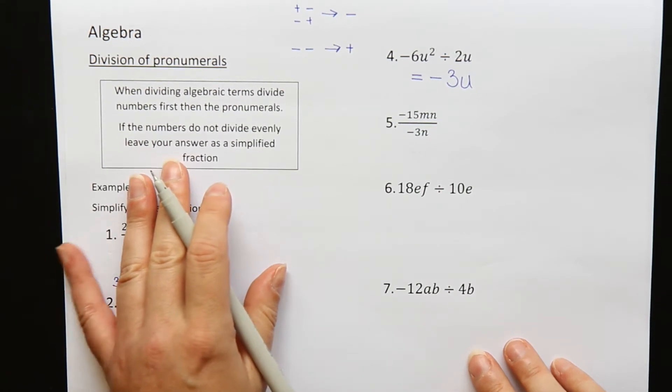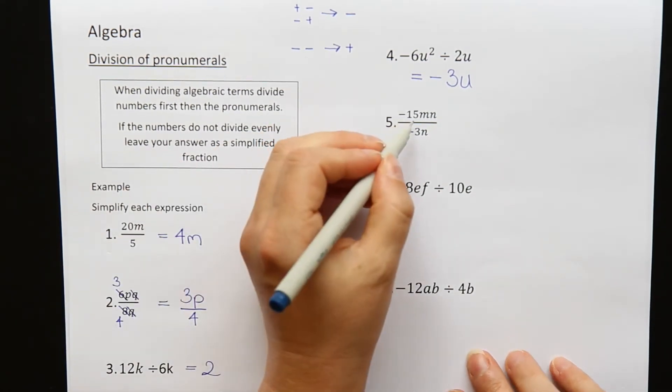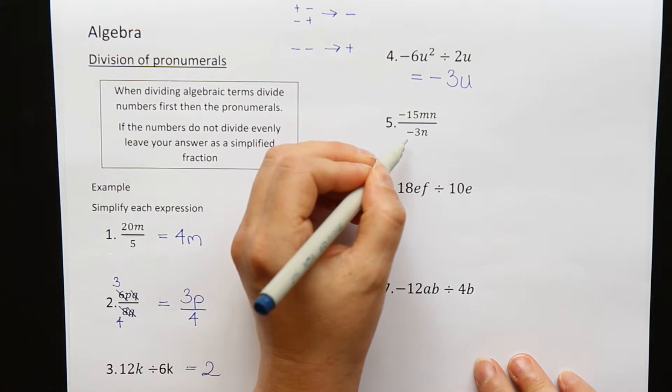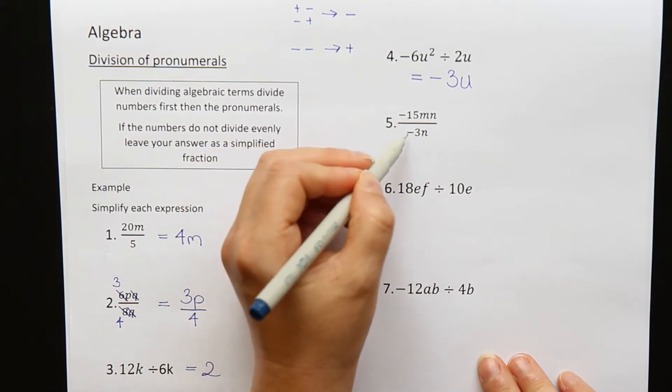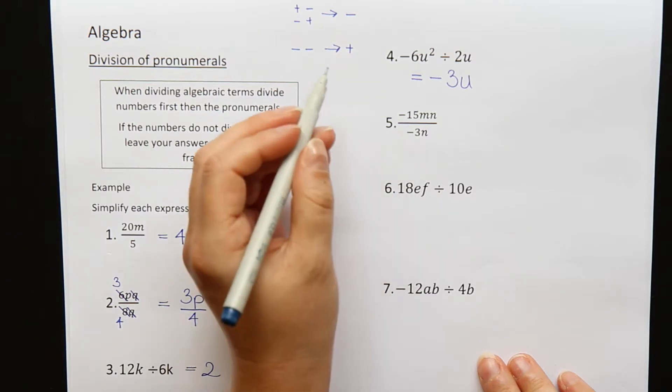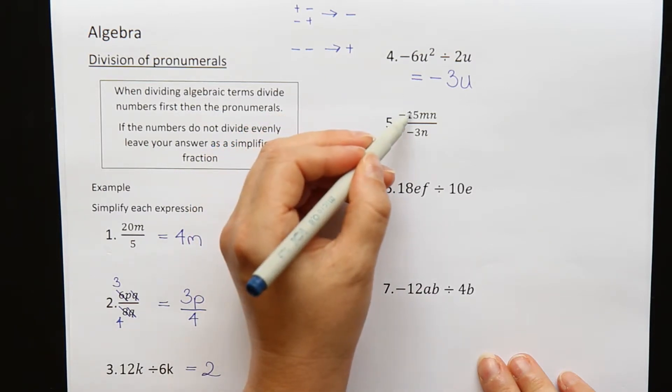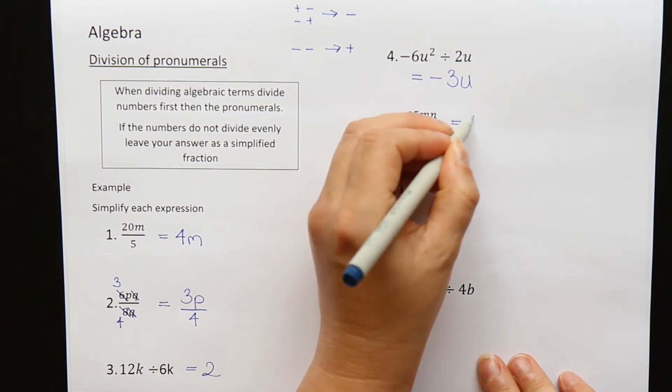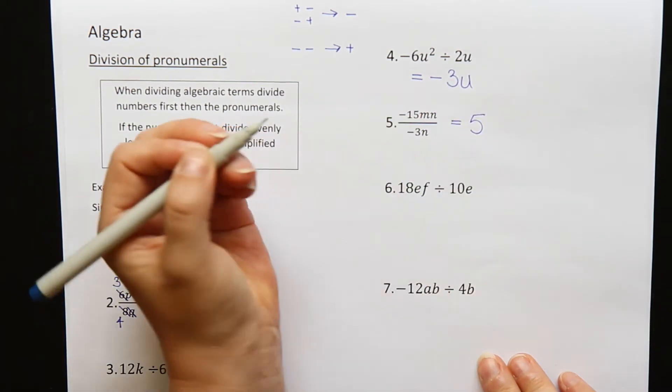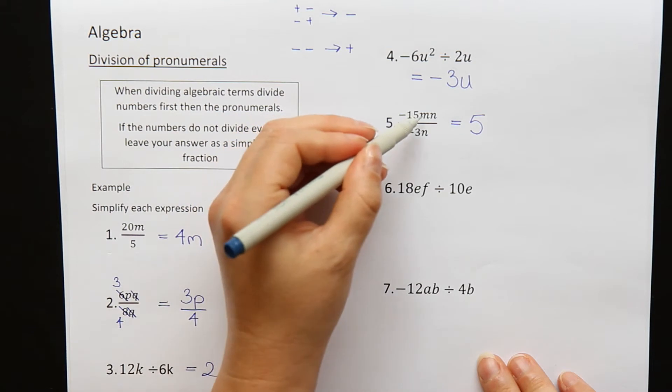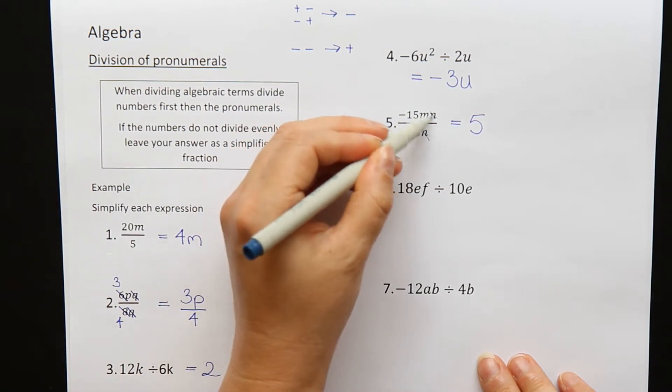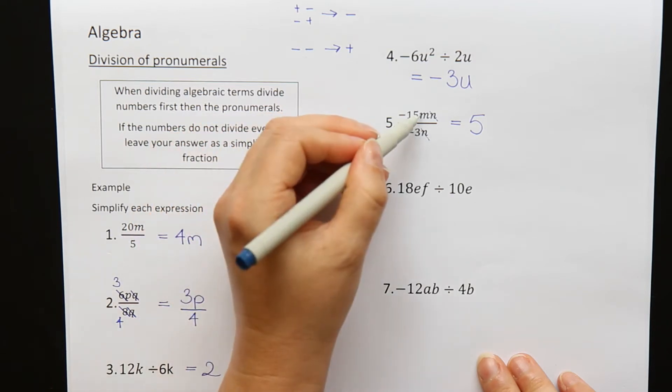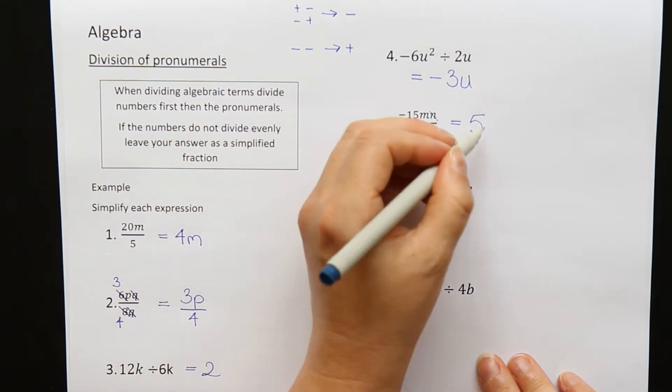Question five. Minus 15mn, divide by minus 3n. Minus divide by minus will become a plus. 15 divide by 3. That goes nicely and gives you 5. So a plus 5. And let's look at the letters. I have an n on the top and an n on the bottom. They will cancel out. And all that's left on the top here is the m.